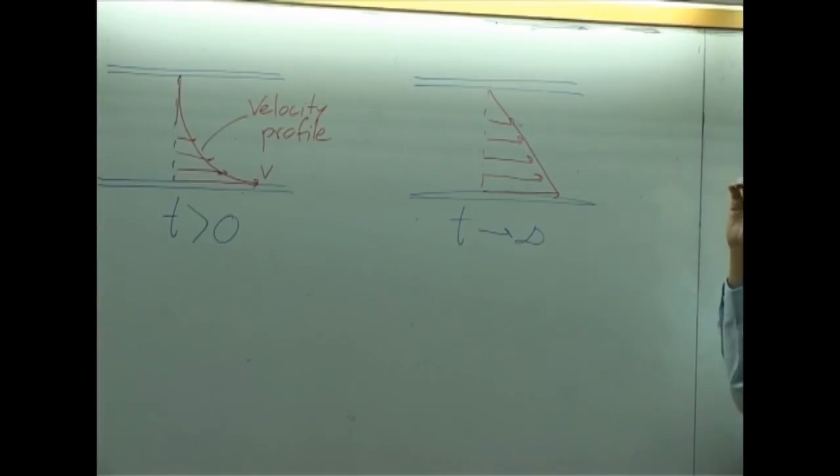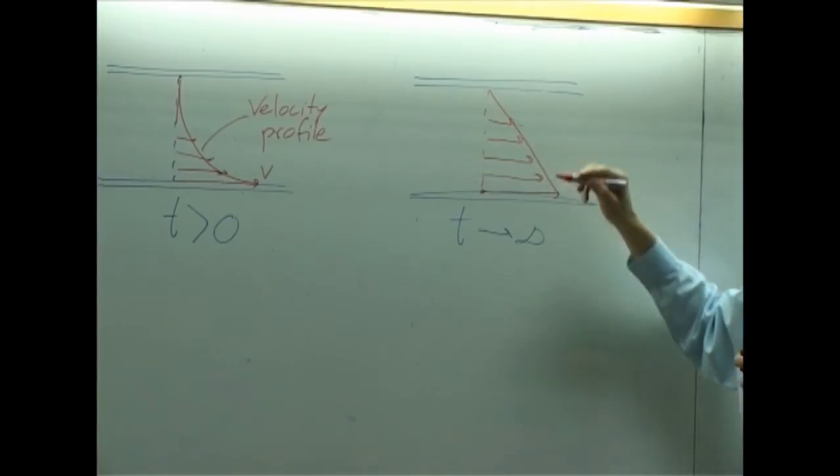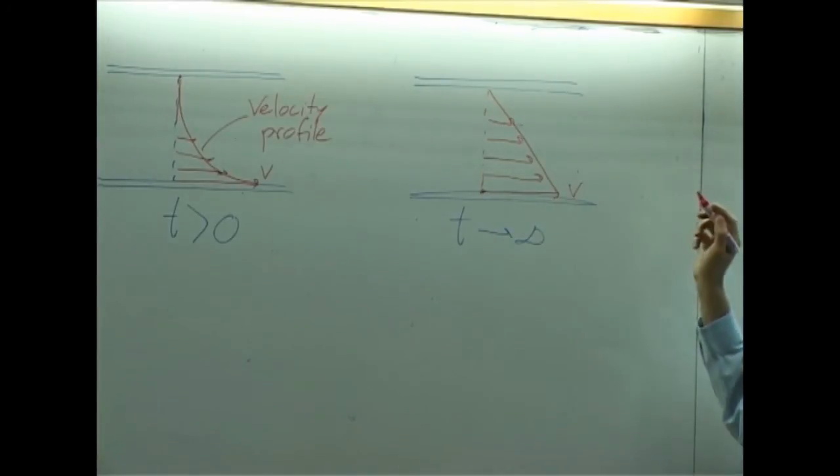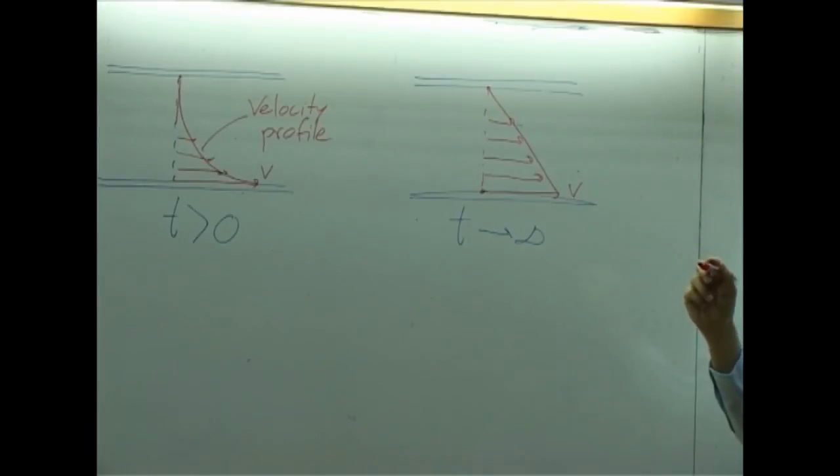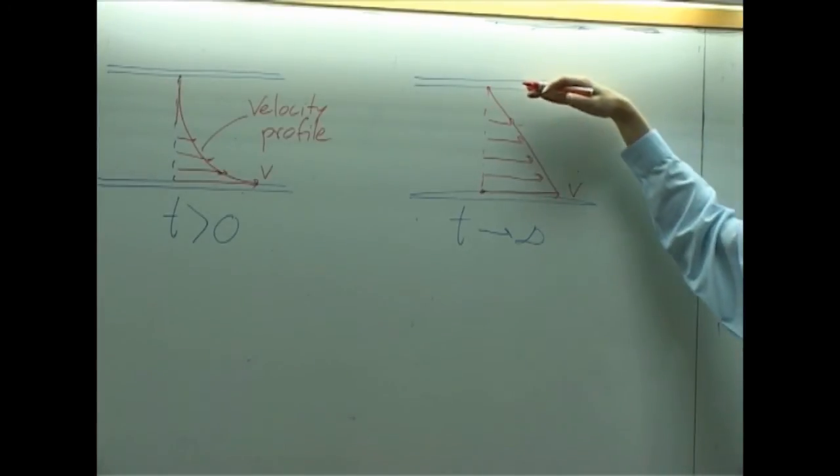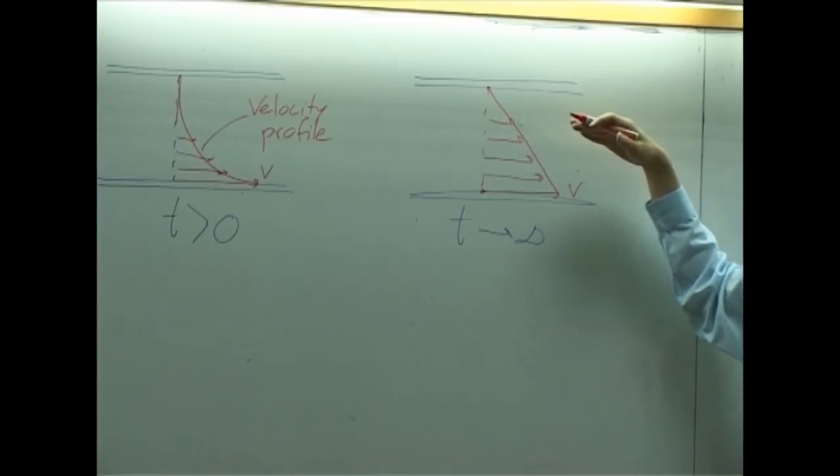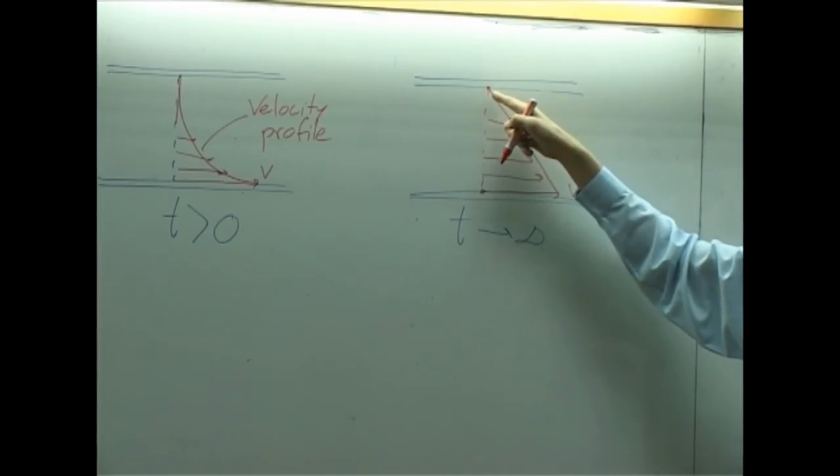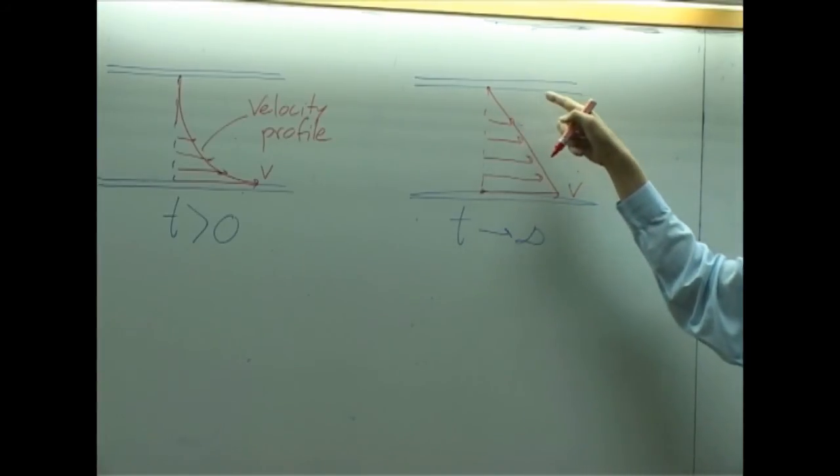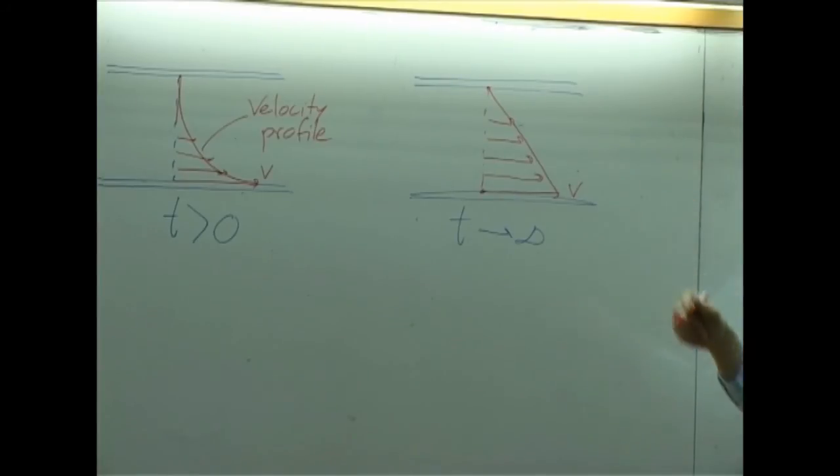However, you should notice that at steady state, velocity at this point is still equal to V. As long as you're still pulling this plate at the constant speed of V because of the no slip condition. Up here, velocity is equal to zero because the top plate here remains stationary. So, under no slip condition, fluid-solid interface, the velocity here is supposed to equal to velocity of the solid, which is zero in this case.